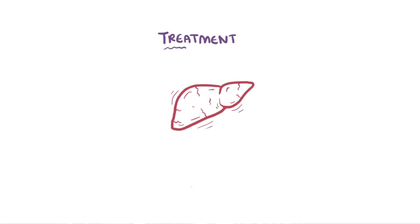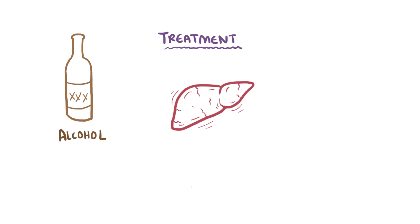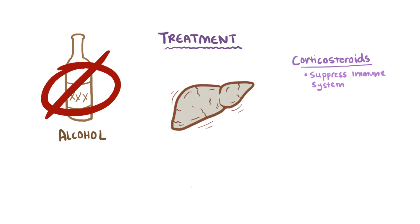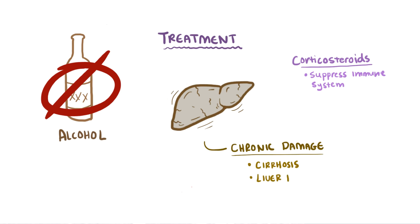Treatment, again, involves completely stopping alcohol consumption, and in some cases corticosteroids can help suppress the immune system. Finally, if it's allowed to progress far enough, chronic alcohol-induced liver damage may lead to cirrhosis and liver failure.